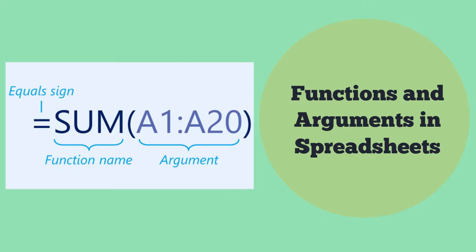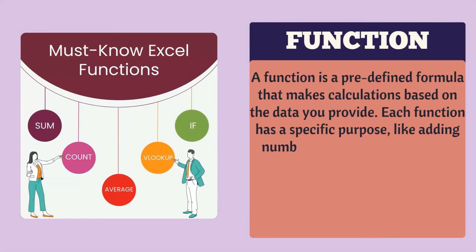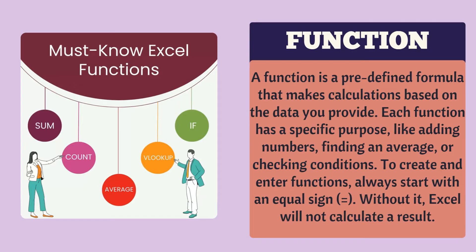Now let's talk about functions and arguments. In a spreadsheet, a function is a predefined formula that makes calculations based on the data you provide. Each function has a specific purpose, like adding numbers, finding an average, or checking conditions. To create and enter functions, always start with an equal sign. Without it, Excel will not calculate a result.